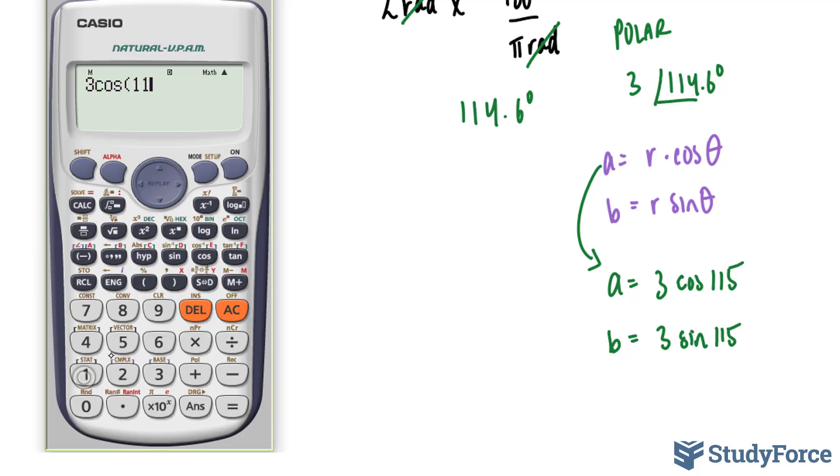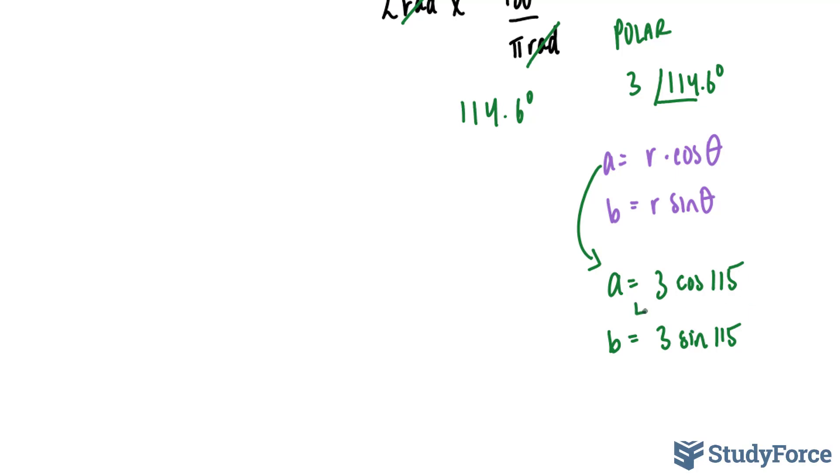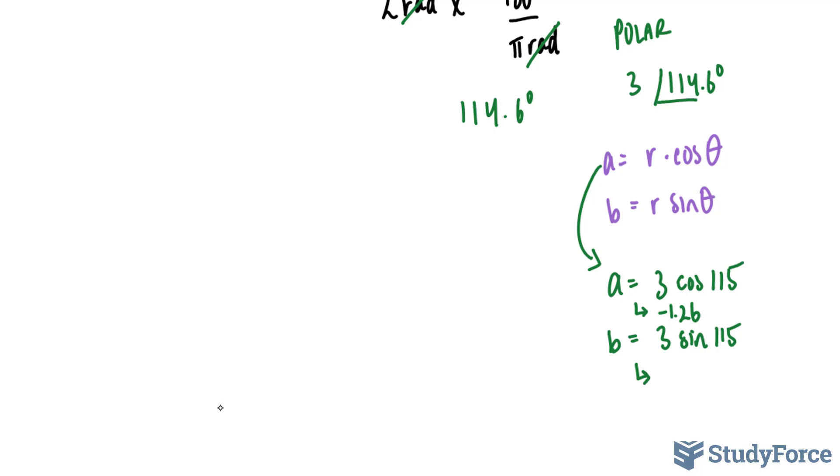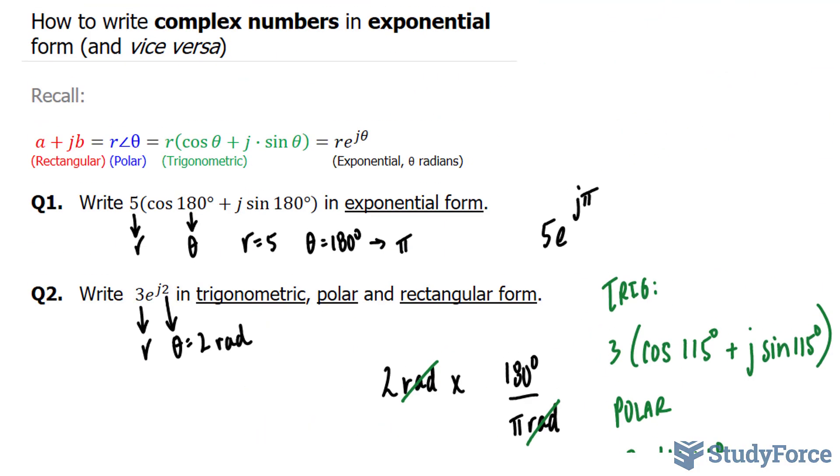Using our calculator, that gives us negative 1.26. And this one gives us 3 times sine of 115, 2.71, leaving us with negative 1.26 plus 2.71i or j, however you feel comfortable writing your complex number. And so there you have it. Two examples on how to write complex numbers in exponential form and vice versa.